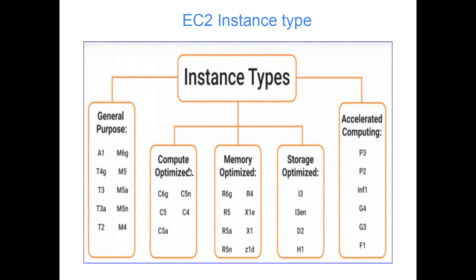You don't need to remember all these names — I've been working for four or five years and I don't either. What you should understand is that there are different types of instances available with AWS: storage optimized, memory optimized, compute optimized, and general purpose. Usually, even in my current project, we go with M5 which is general purpose, because we don't have any specific requirement. I would say 80% of the time you can go with general purpose EC2 instances. But if a client or solution architect says they need a lot of computation, you should be able to guide them toward Compute Optimized instances.